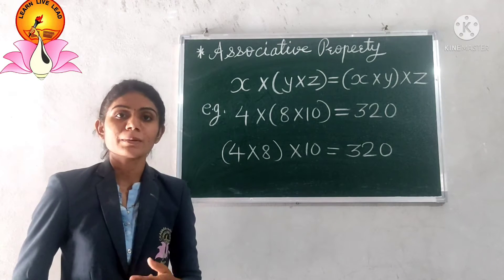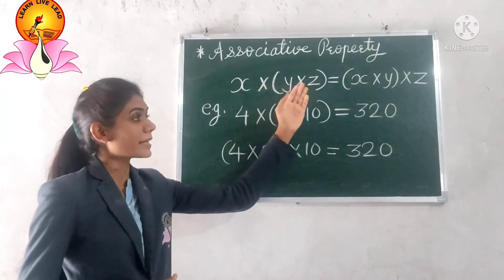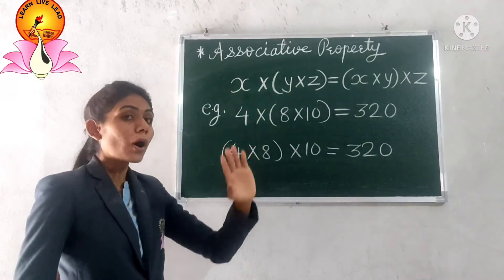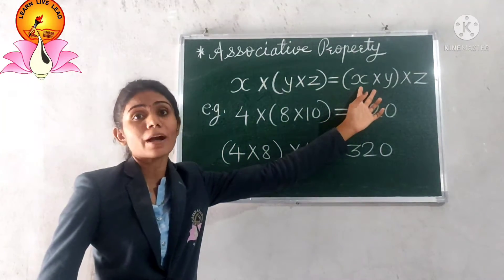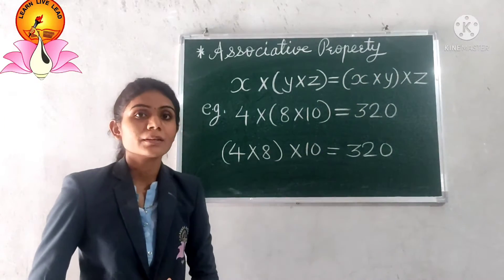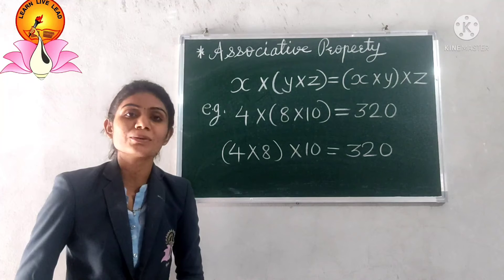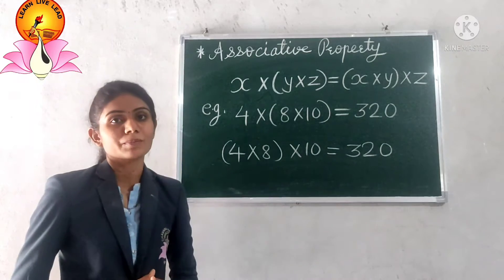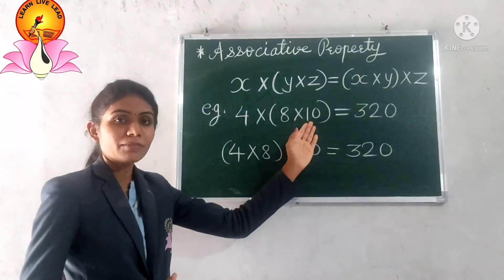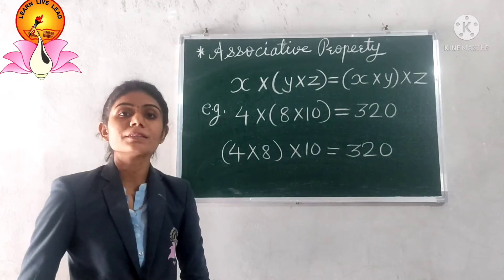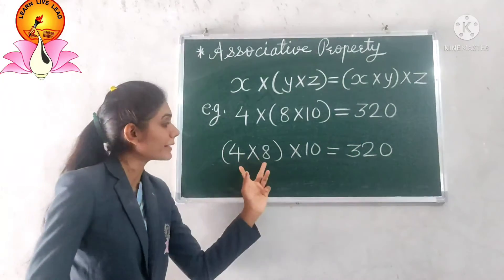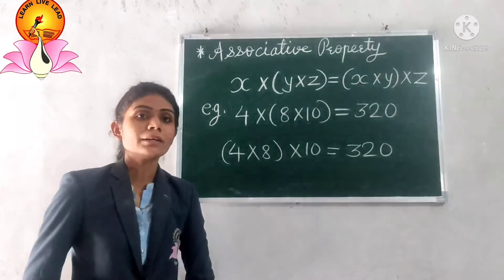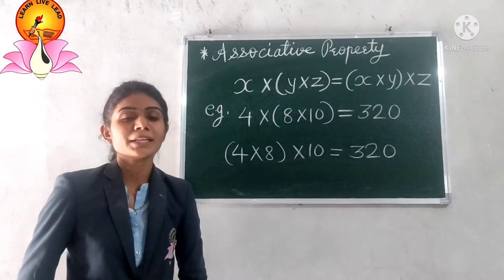Next, the associative property. This property states that if x, y, z are three whole numbers, then whether we multiply y and z first or multiply x and y first and then multiply by z, both ways the answer will be equal. For example, 4, 8, and 10 are three whole numbers. If we multiply 8 × 10 first and then multiply by 4, we get 320. Both groupings give the same answer.